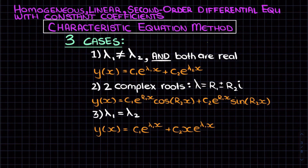Here is a summary of our three possible cases. We first write the characteristic equation and find lambda 1 and lambda 2 by either factoring or using the quadratic equation. If lambda 1 doesn't equal lambda 2, the general solution is y equals c1 e to the lambda 1 x plus c2 e to the lambda 2 x. If lambda is a complex number of the form r1 plus or minus r2 i, the solution is y equals c1 e to the r1 x cosine(r2 x) plus c2 e to the r1 x sine(r2 x). And if we get a repeated root where lambda 1 equals lambda 2, the general solution is y equals c1 e to the lambda 1 x plus c2 x e to the lambda 1 x.